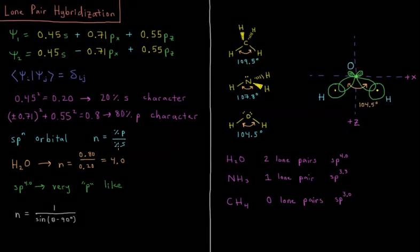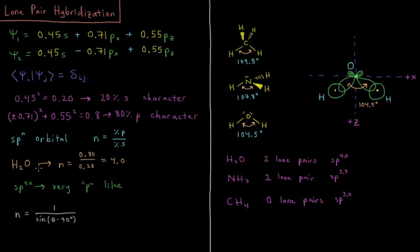In this case, we have 80 over 20, which for water would give us an SP4 orbital. So an SP4.0 would be a very p-like orbital, because it's four parts p to every one part s. So this orbital is, in fact, mostly a p-type orbital instead of an sp, which is much more heavily favored towards the s.